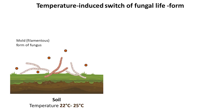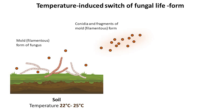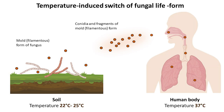In the soil, at temperatures between 22 and 25 degrees Celsius, thermally dimorphic fungi grow as mycelia, producing infectious spores called conidia. When these soils are disturbed, conidia and fragments of mycelia can become airborne, creating infectious particles that mammals can inhale.